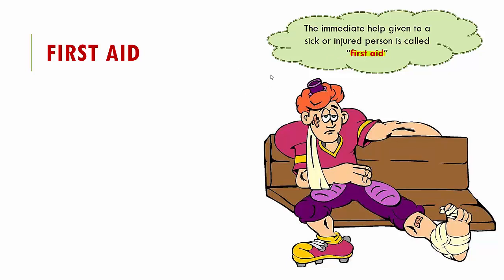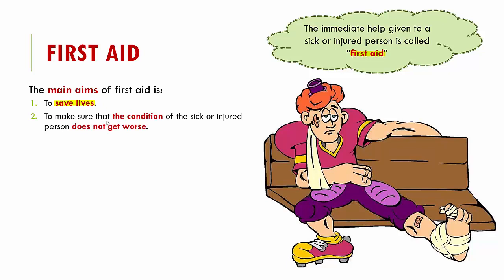First aid is the immediate help given even before calling for professional help. The main aims of first aid are: first, to save the person's life; second, to make sure the condition of the injured or sick person does not get worse; and third, to keep that sick or injured person comfortable until proper medical help arrives. These are the three main aims of giving first aid.